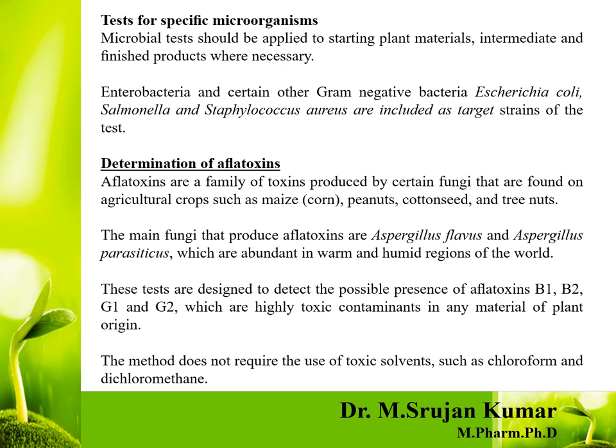Next parameter: determination of aflatoxins. Aflatoxins are a family of toxins produced by certain fungi found on agricultural crops such as maize, peanuts, cottonseed, and tree nuts. The main fungi that produce aflatoxins are Aspergillus flavus and Aspergillus parasiticus, which are abundant in warm and humid regions of the world.